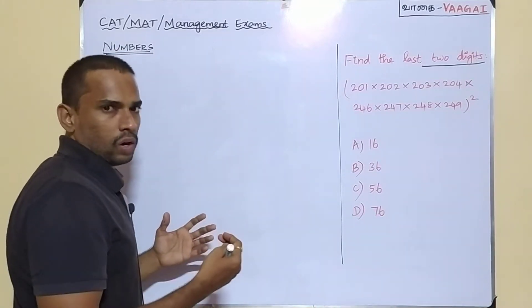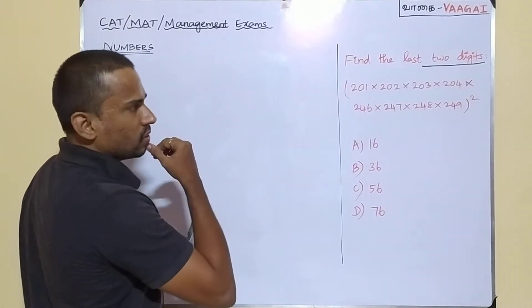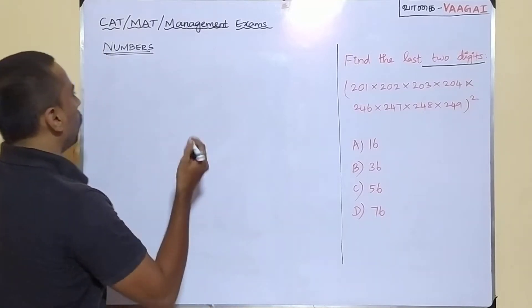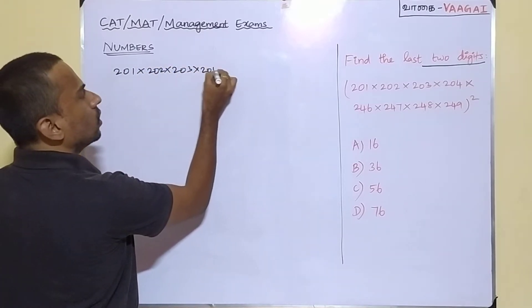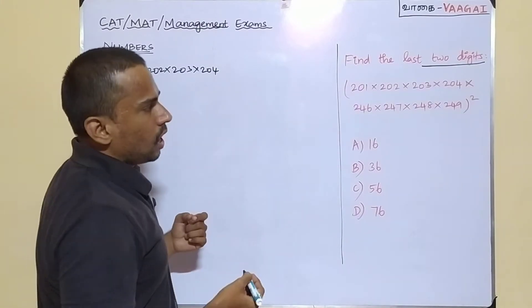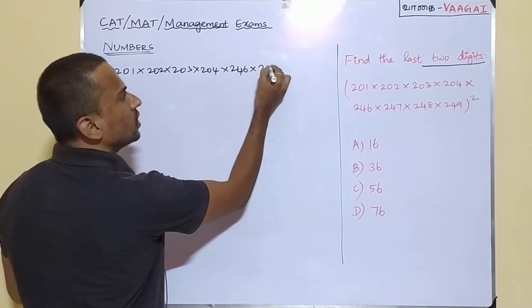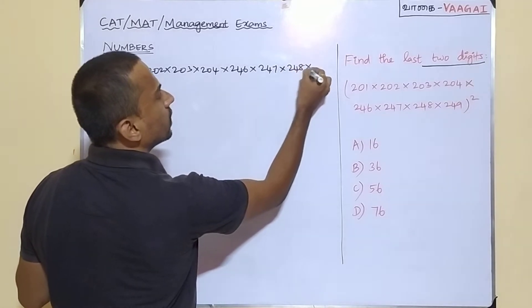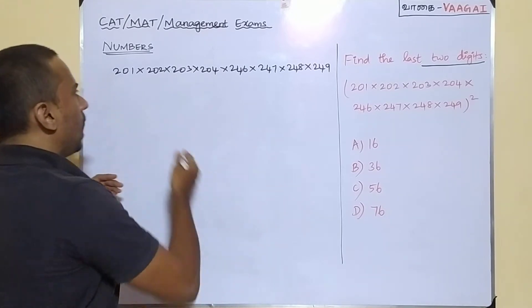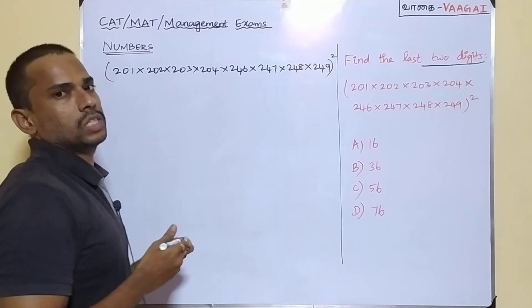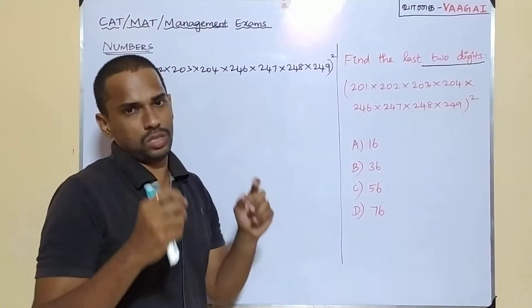Let us now see the approach we need to handle to get the answer. The expression we have is 201 × 202 × 203 × 204 × 246 × 247 × 248 × 249 — a total of eight numbers — and this product to the whole square. For this we have to find the last two digits.